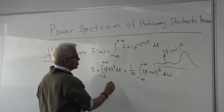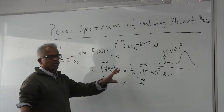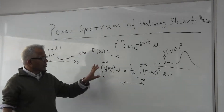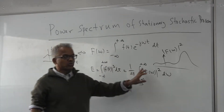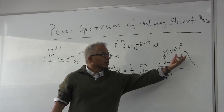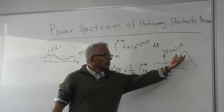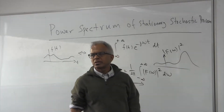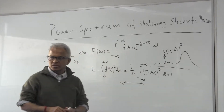This relation gives the Parseval identity. The energy can be expressed either in time using the time function or in frequency using the frequency function. For the way this is described, most of the energy is concentrated here, so we could call this a band-pass signal, etc. This is for deterministic signals.